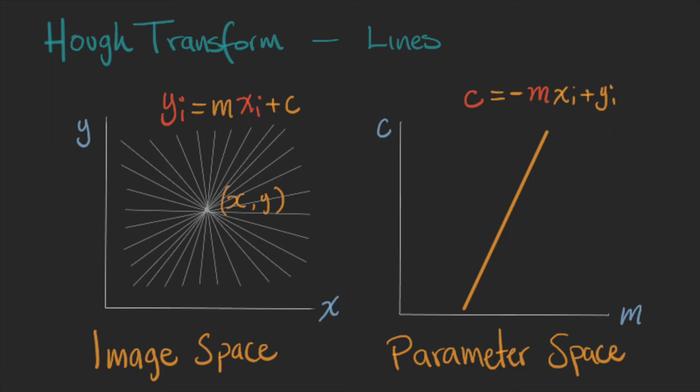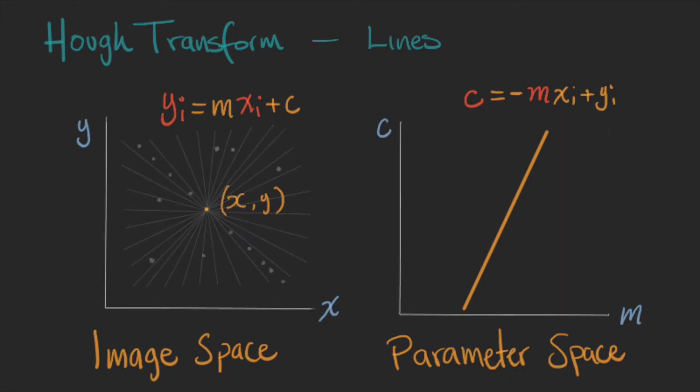So now, how do we find the one that we want? We take another point in the image and that point will create a new line in the parameter space.